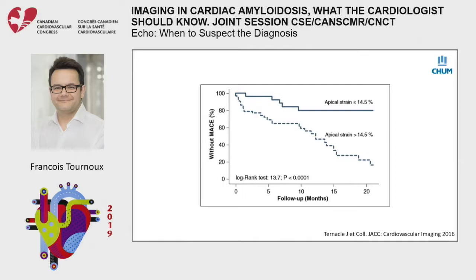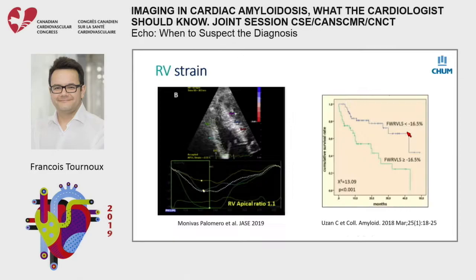The value of apical strain has strong prognostic value for patient follow-up. When you suspect the diagnosis, report both the global longitudinal strain and the apical strain. For RV strain, a few groups have shown the same base-to-apex gradient in the right ventricle, and global longitudinal strain for the right ventricle also has prognostic value.